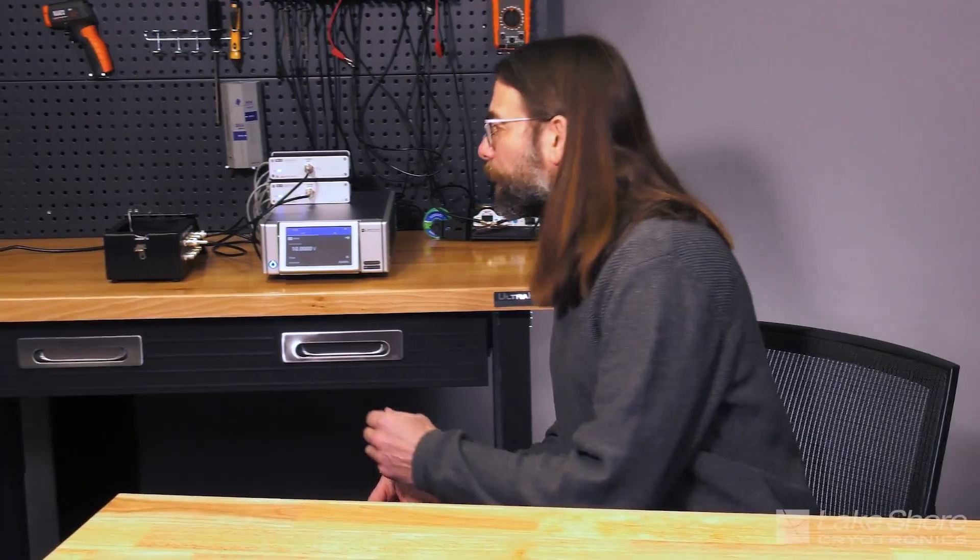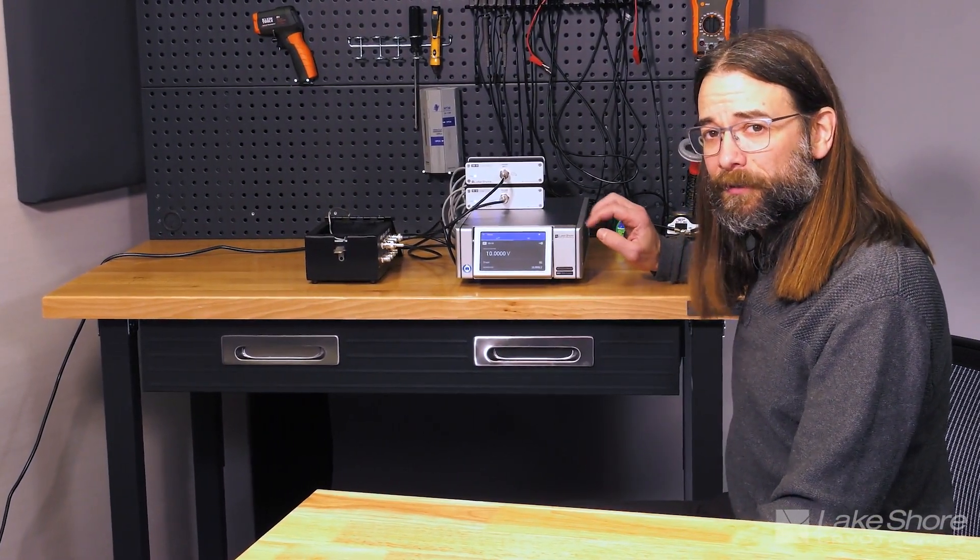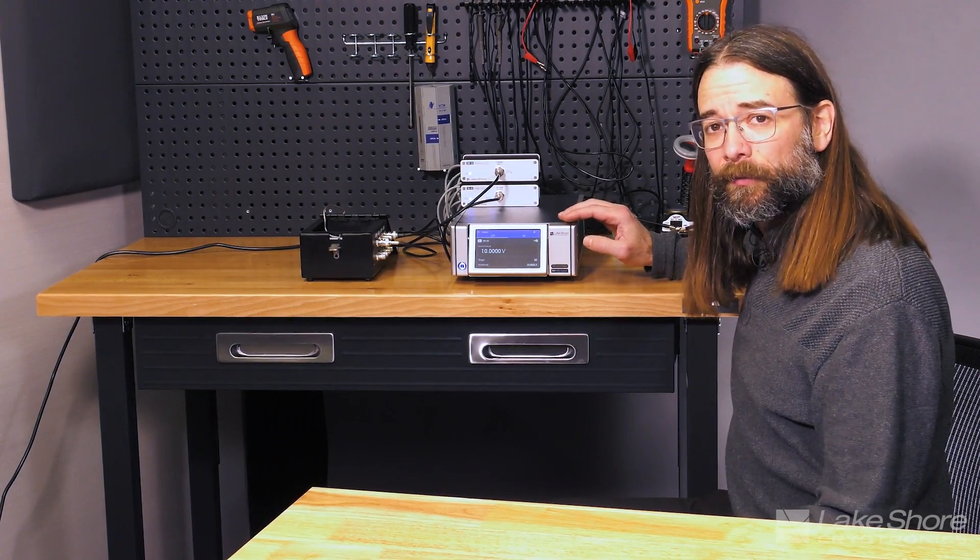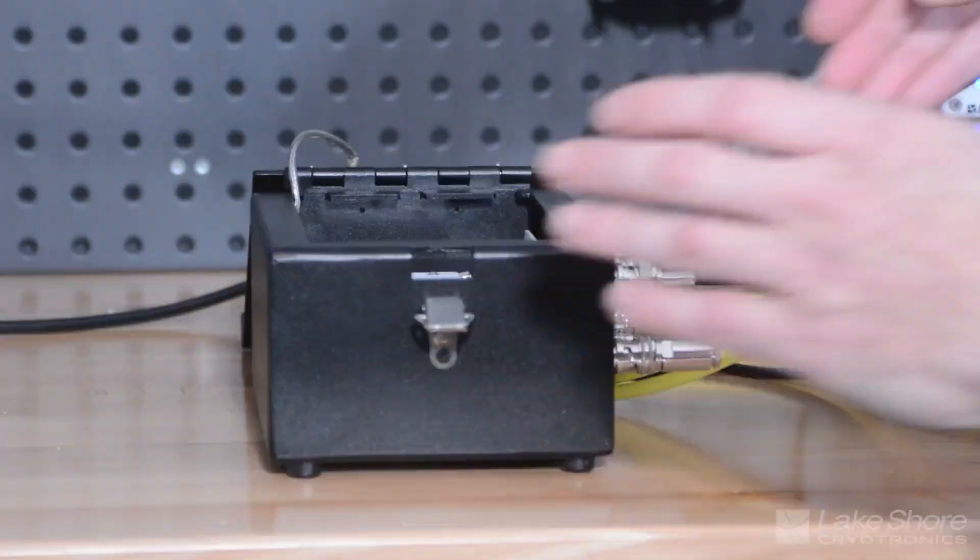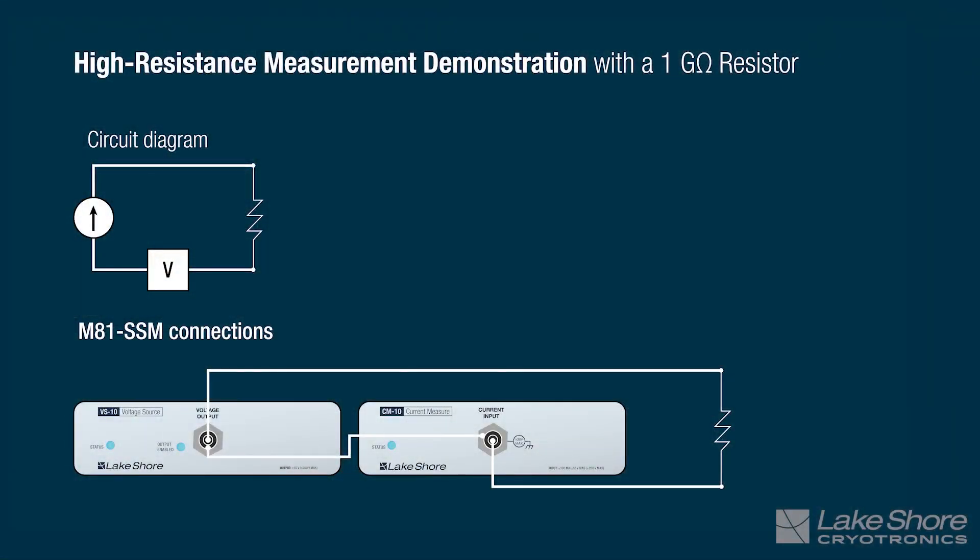So now let's take a look at the setup for this high resistance measurement. What we've got is the Lakeshore M81. This is our synchronized source measure unit. It's capable of sourcing current voltage as well as measuring current or voltage in both DC and lock-in. In this particular case we're going to look at a 1 gigaohm resistor in our test box. We've got a voltage output or voltage source the VS10 and then we've also got a current measurement module that's the CM10.